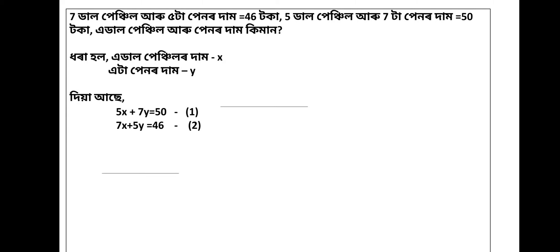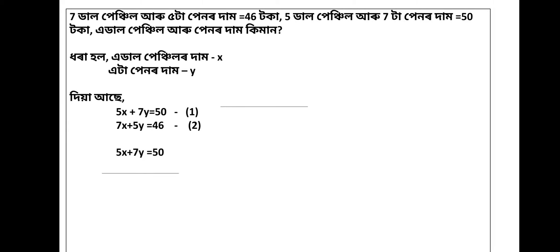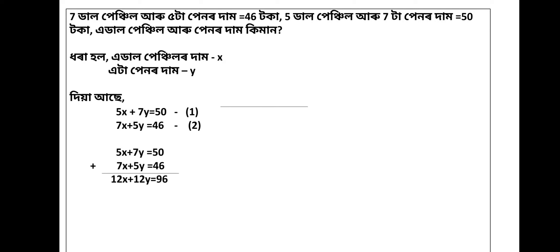After you choose this equation, here equation 1: you will choose to change these equations. If you choose equation 1, then you choose the second equation. You choose to change equation 1 and 2. It means 5x plus 7x is equal to 12x, and 7y plus 5y is equal to 12y. 50 plus 46 is equal to 96. So we have 12 common to a bracket of x plus y equals 96.